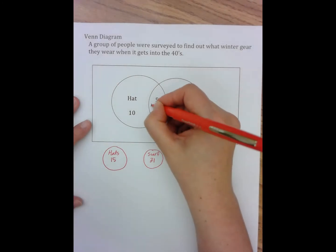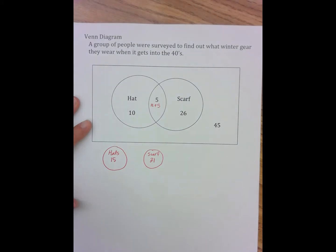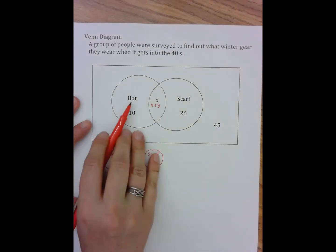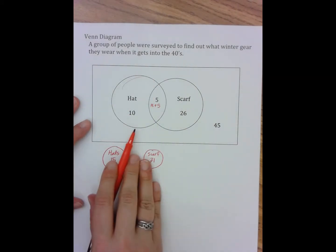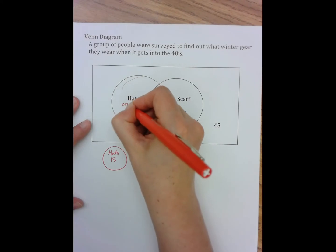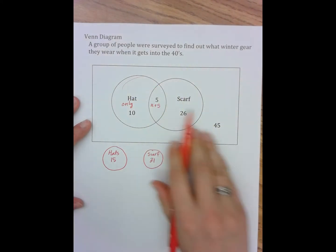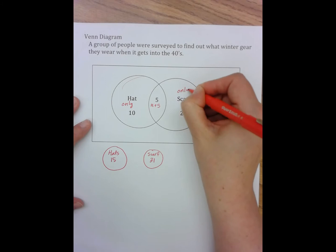It stands for the 5 people who said hats and scarves, which means that this 10 out here means only hat, and this 26 out here means only scarf.